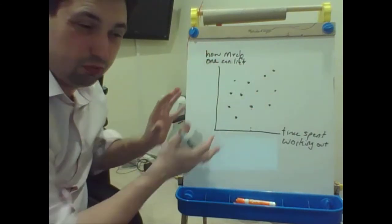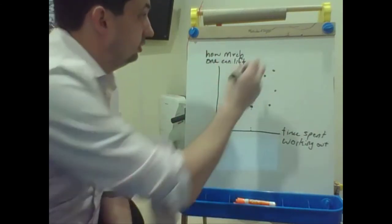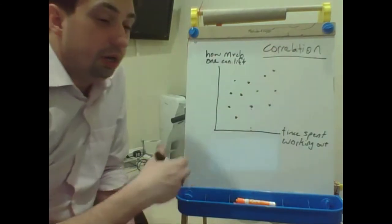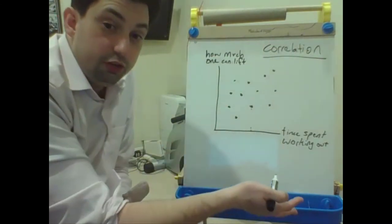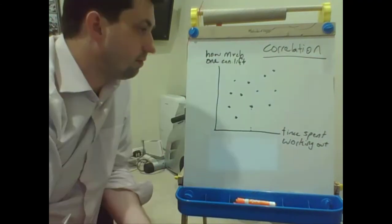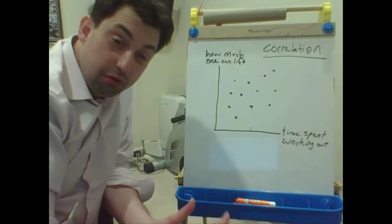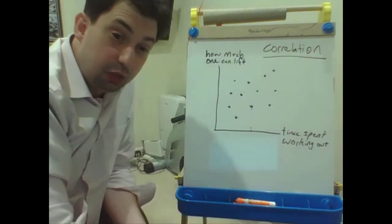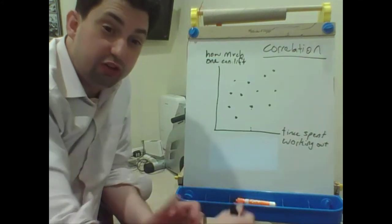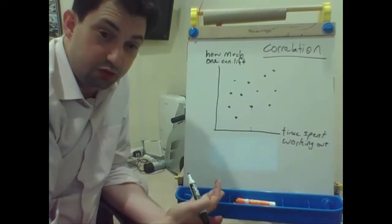How these variables run together is what we call correlation — when one variable changes, how does the other variable change. In this particular example, these variables are positively correlated: when one increases, the other increases; when one decreases, the other decreases.